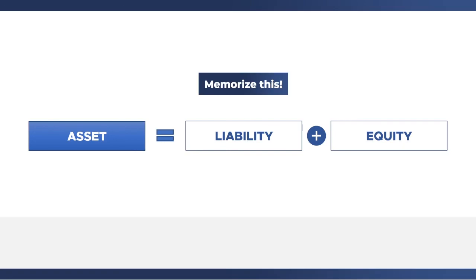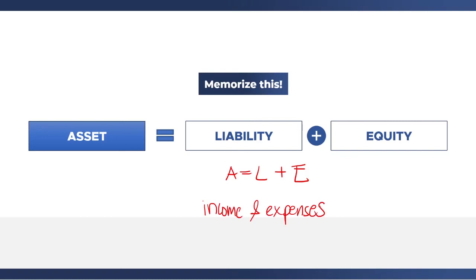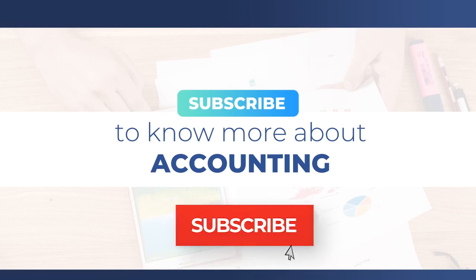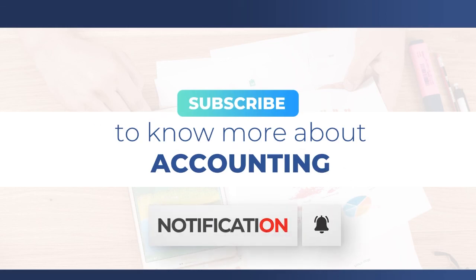For now, focus on memorizing the accounting equation: assets equals liabilities plus equity. We have already discussed each of these elements in previous weeks. In the next video, we will cover the last two elements of the financial statements — income and expenses — and how they fit into the equation. I would say this is where the accounting process gets more and more exciting. That's it for this video. If you have any questions, feel free to comment below. If you want to be updated on future topics, make sure to hit the subscribe button and the notification bell.